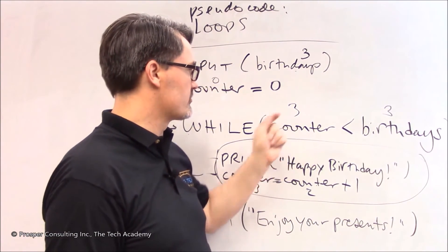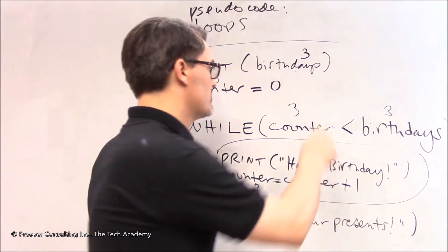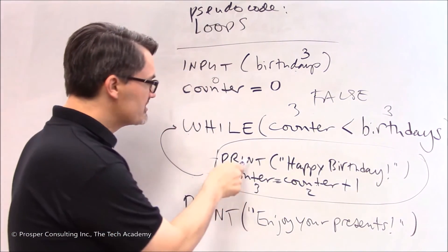So it goes back up and says alright let me check this out. It checks out the value of counter. It's three. Value of birthdays. It's three. It checks is three less than three. No. It's not. It's false. That is not true.